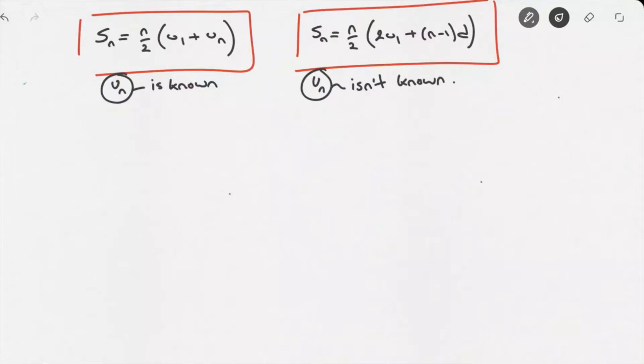And it's sort of that simple. Very often our criteria for choosing which formula to use can be as simple as that. So let's go ahead and see an example. Let's say we're asked to calculate the sum of the first ten terms of the sequence defined by un equals 3n plus 2.